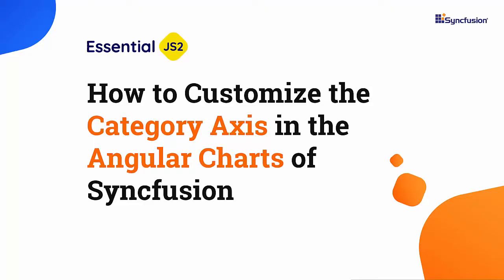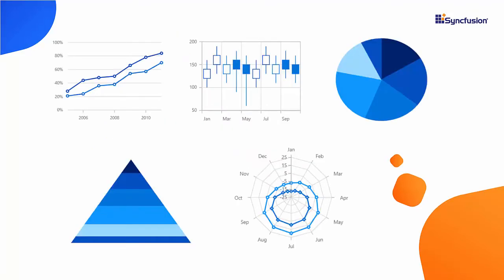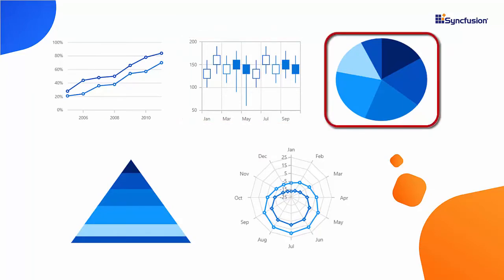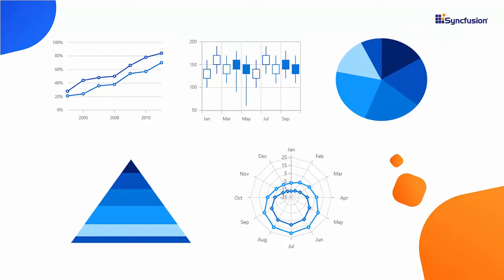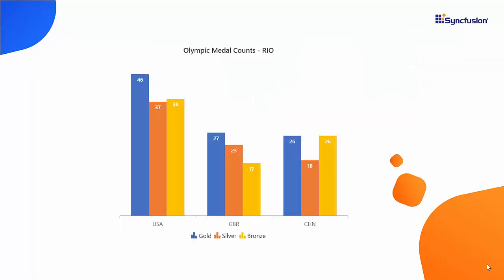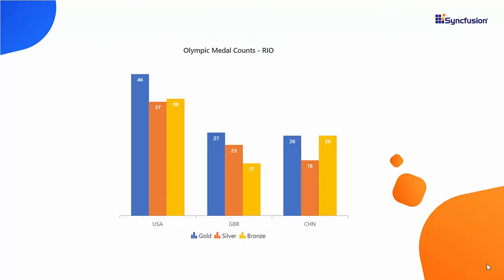Hi everyone, welcome back. Having discussed in my previous videos about how to add different Angular chart types of Syncfusion like line chart, financial charts, circular charts, triangular charts, polar and radar charts to an Angular application — now in this video I will explain how to customize the chart axis with categorized values to display text values on the horizontal axis instead of numeric intervals. In this case I need to make use of the category axis.